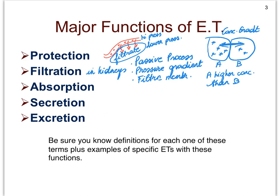That filtrate will ultimately, after some manipulation in our kidneys, become the urine that we excrete. In the term excretion you see 'ex' as its prefix — this is a form of removing wastes, removing substances from the body, substances literally leaving or exiting the body. So when we have a bowel movement, when we urinate, or even when we sweat, we can argue that we are excreting.